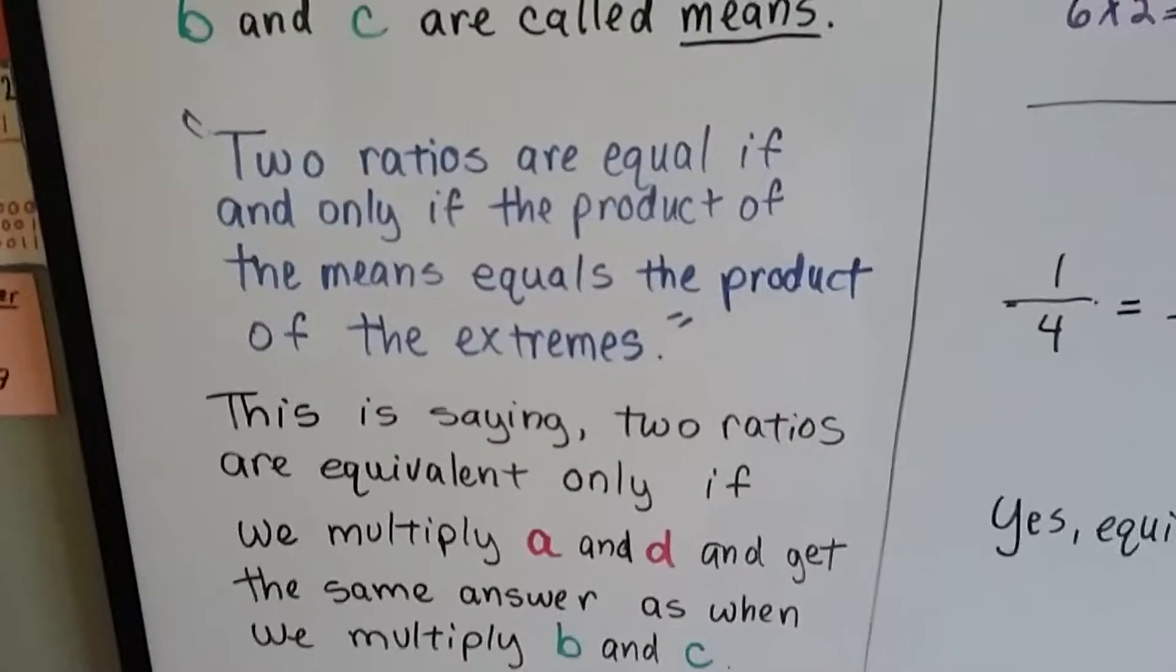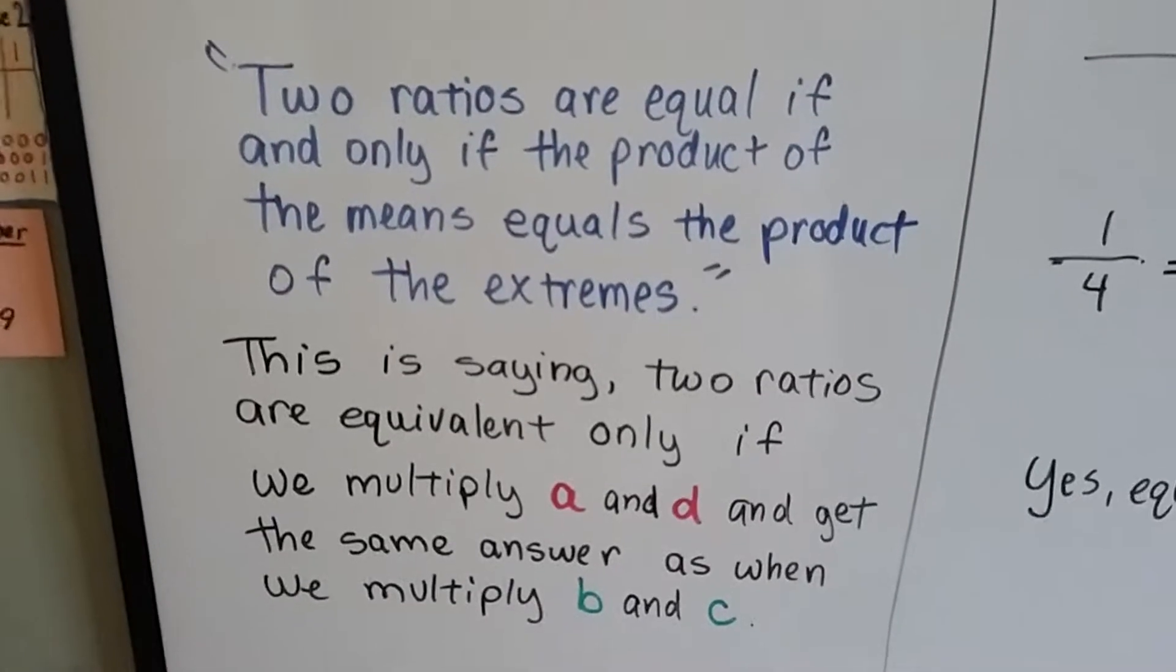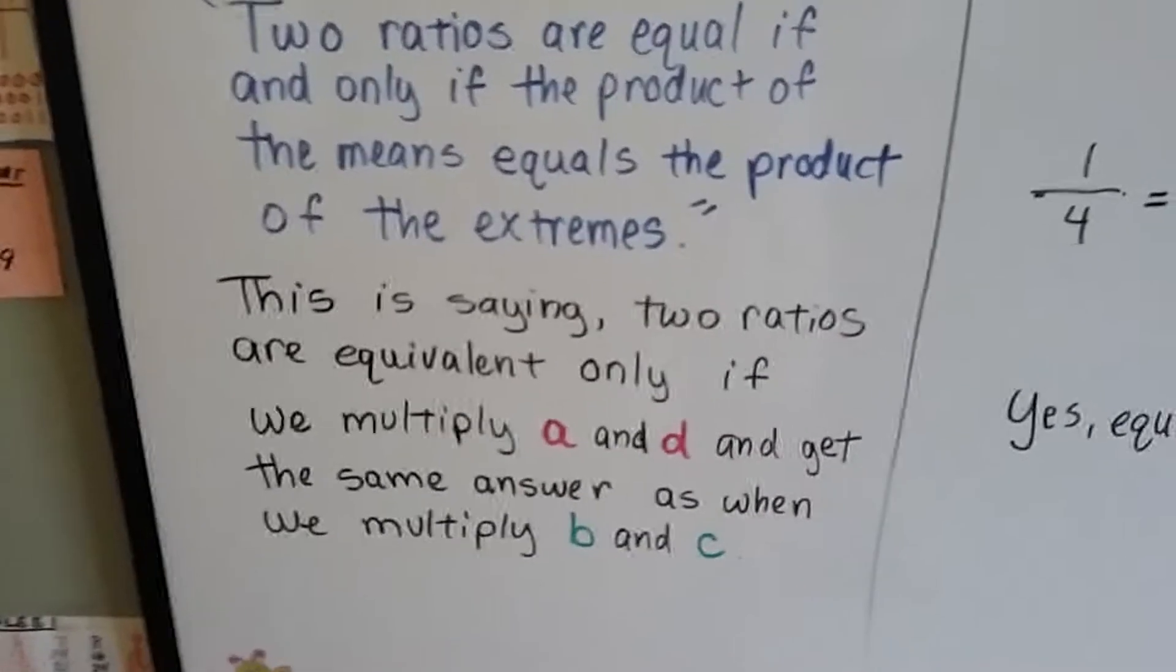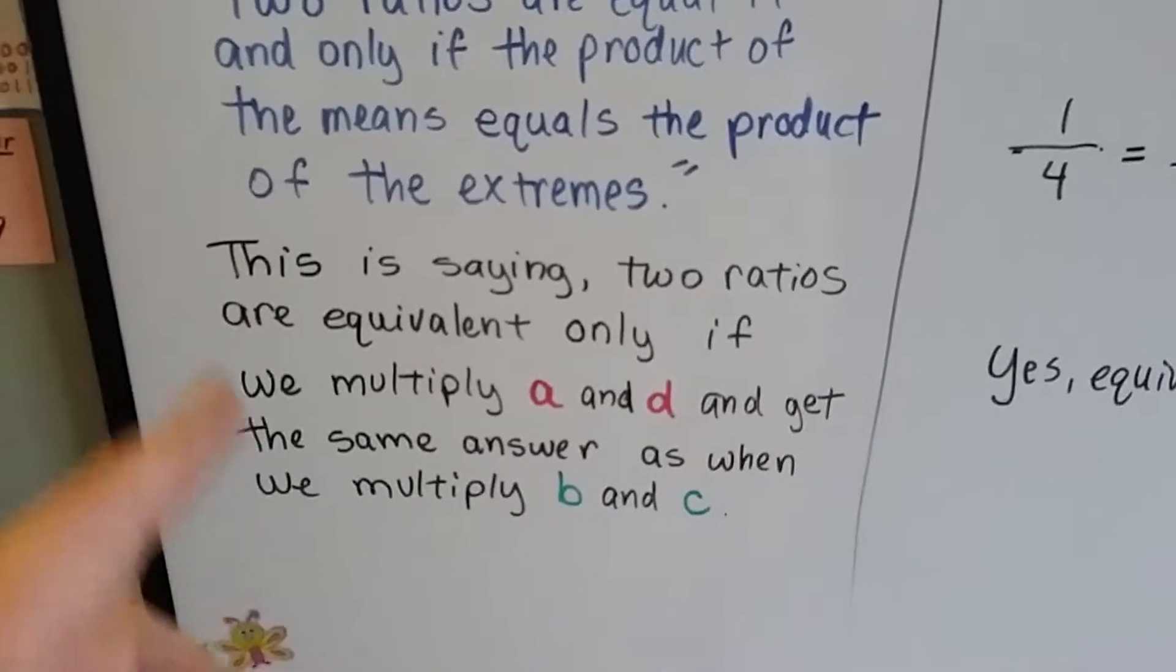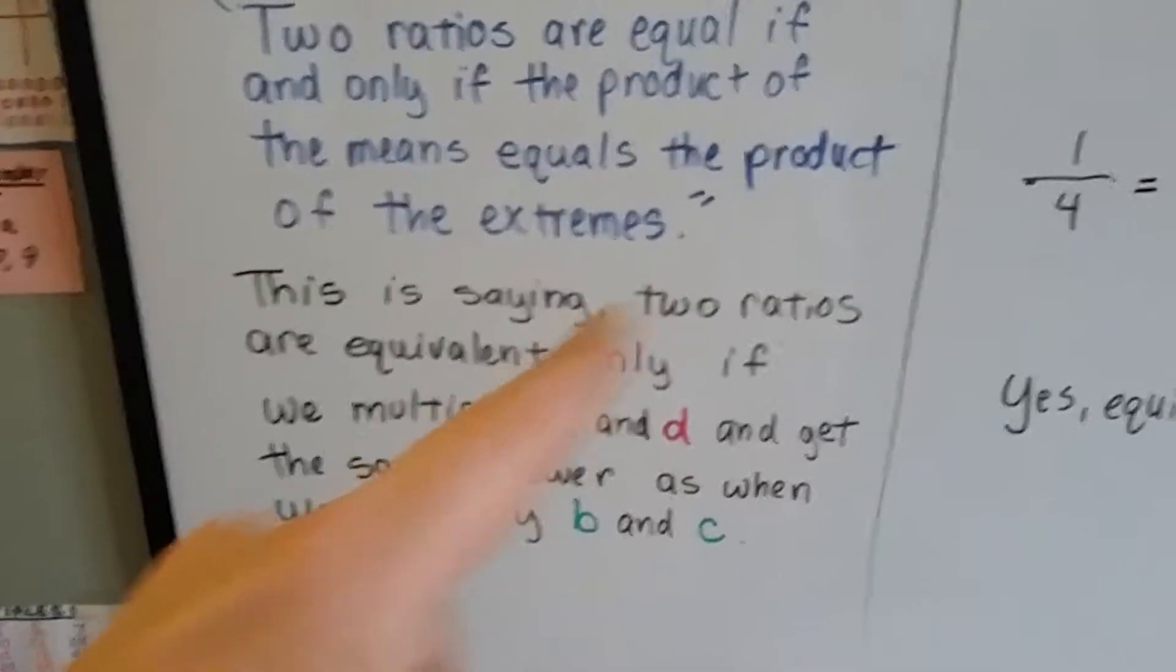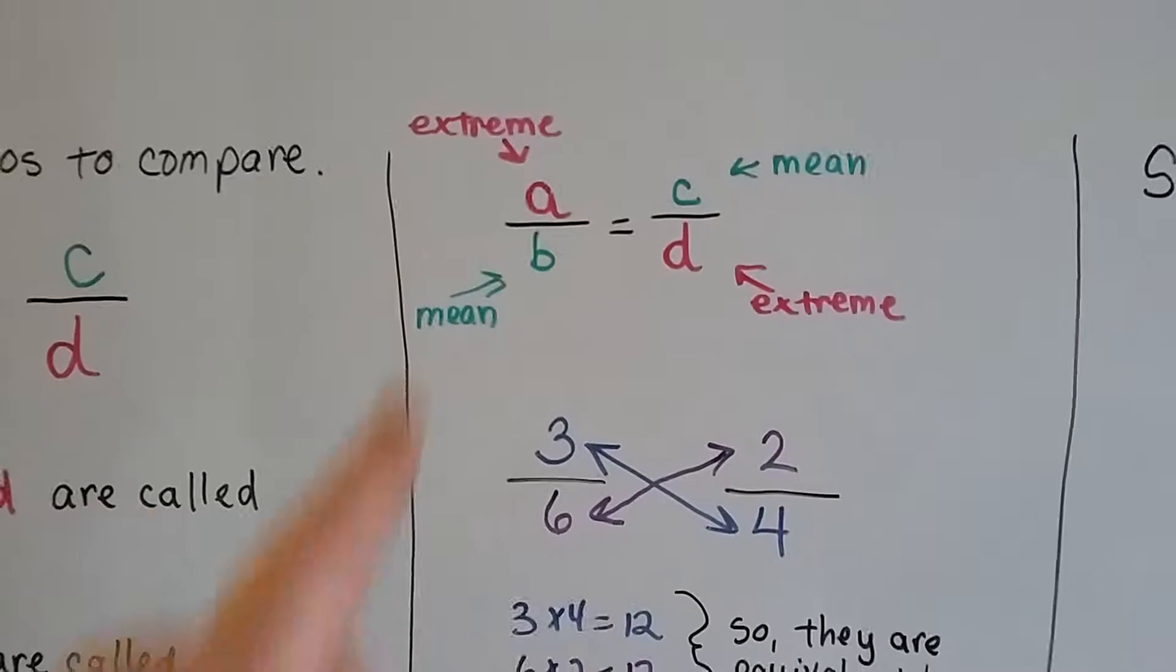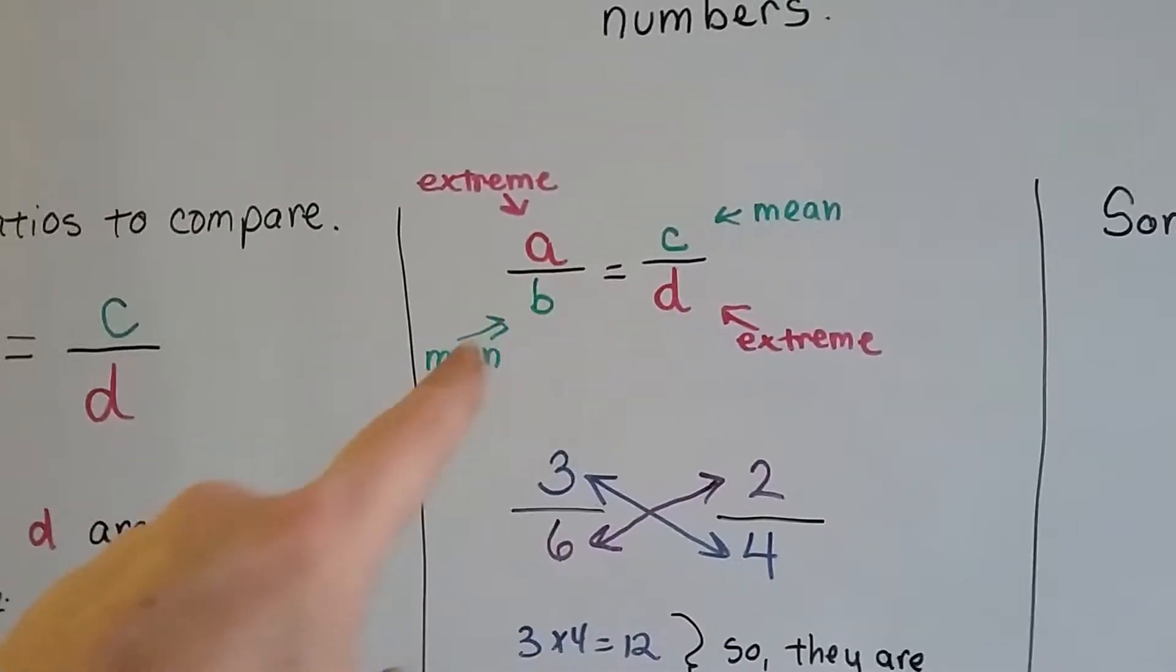Two ratios are equal if and only if the product of the means equals the product of the extremes. This is saying that two ratios are equivalent only if we multiply the a and d cross and get the same answer as when we multiply the b and c across. So the a and d, the pink ones, are the extremes and the green, b and c, are the means.